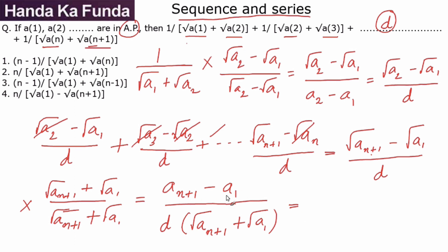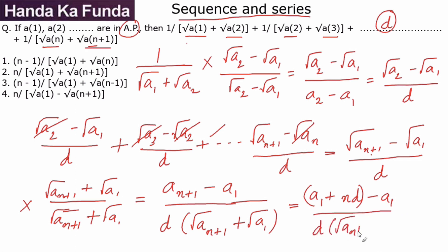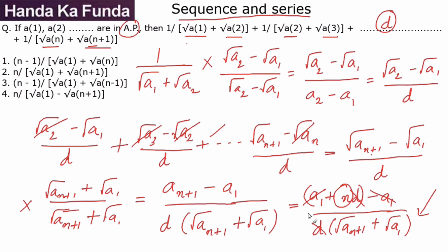Now, a(n+1) = a1 + n·d, so a(n+1) − a1 = n·d. The d in the numerator and denominator cancel, leaving n in the numerator and (√a(n+1) + √a1) in the denominator. So the final answer is n/(√a1 + √a(n+1)).